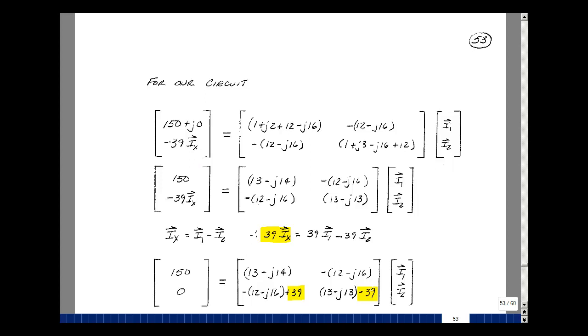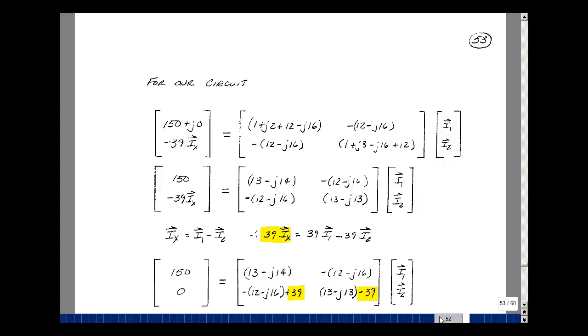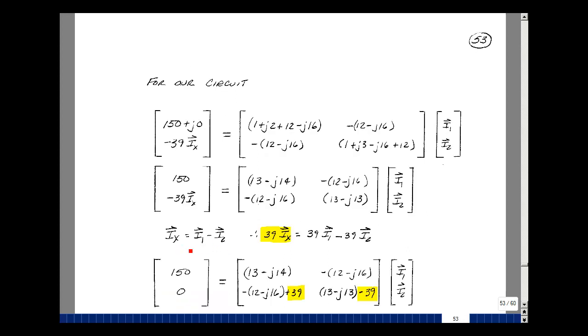But I sub X is the current in the 12 ohm resistor in the minus J16 ohm capacitor. Let's go back to the previous page and take a look at where those are. Here's I sub X, and here's I1, and here's I2. So I sub X is equal to I1 minus I2. Back to page 53 here. So that's the value then of I sub X.